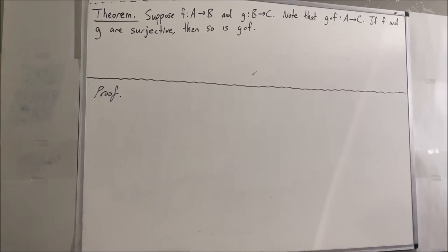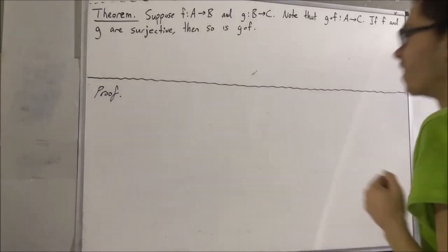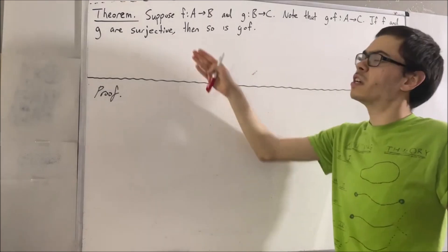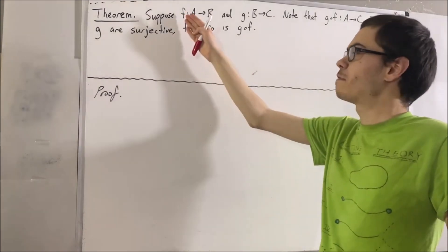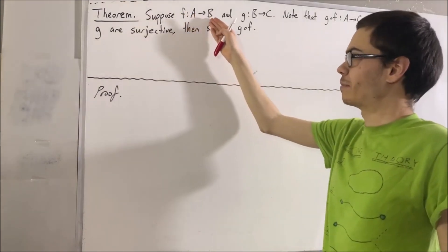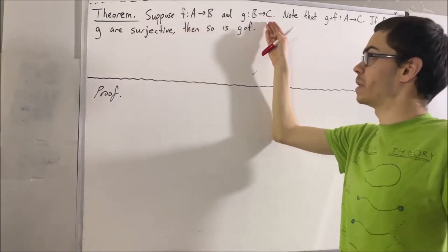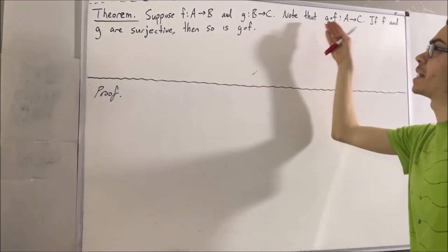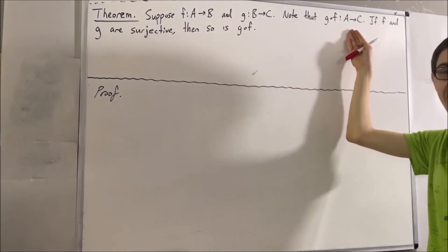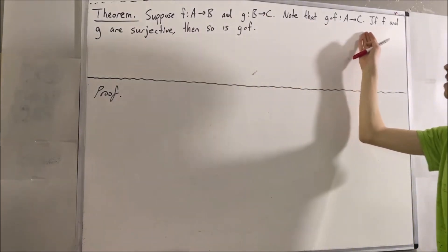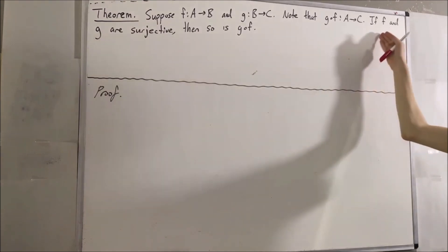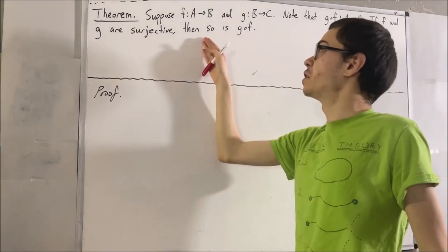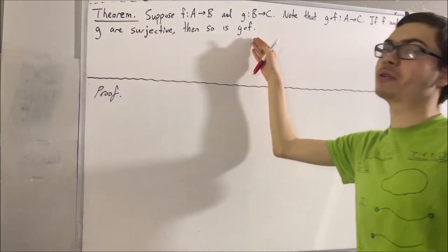Hello! In this video, we're going to prove the following theorem. Suppose f is a function from A to B, and g is a function from B to C. Note that g compose f is a function from A to C. If f and g are surjective, then so is g compose f.